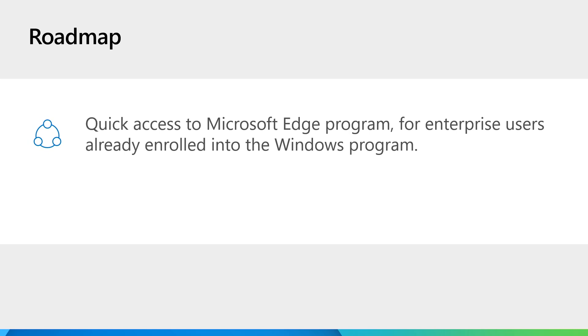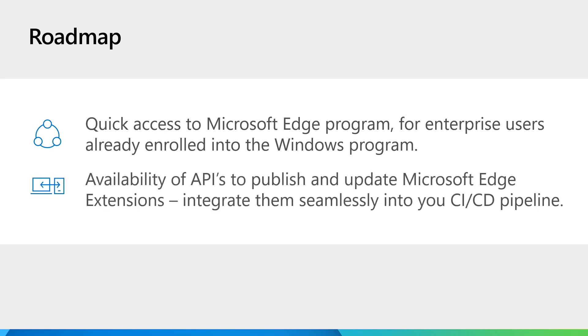Next, I'm going to share the roadmap for Edge extensions. There are two key features coming in the future. First, we're looking to provide quick access to the Microsoft Edge program for enterprise users already enrolled into the Windows program — once this feature rolls out, you will not have to depend on the MSA account to enroll; you will be able to enroll directly from the Windows program. Second, we are also looking to make available APIs so that you can publish and update Edge extensions and seamlessly integrate the whole publishing process into your CI/CD pipeline.